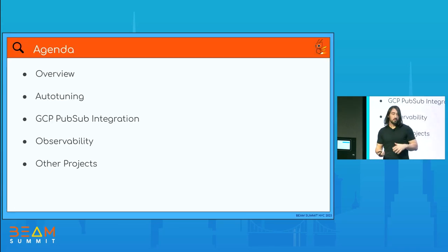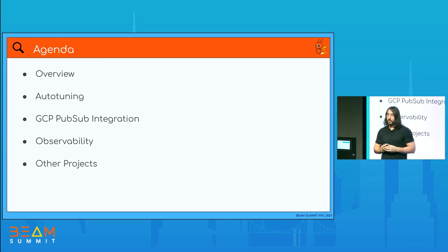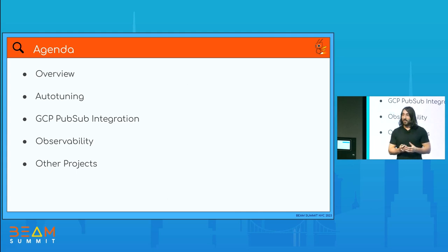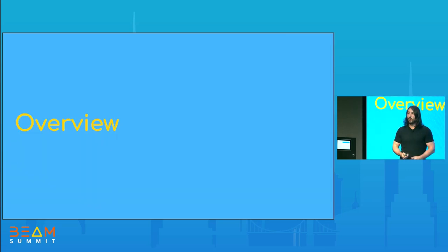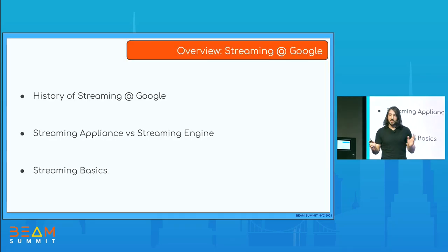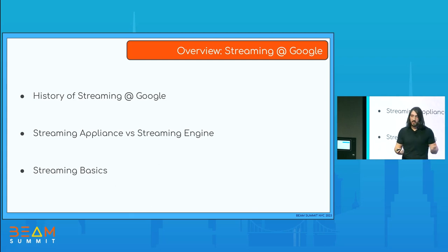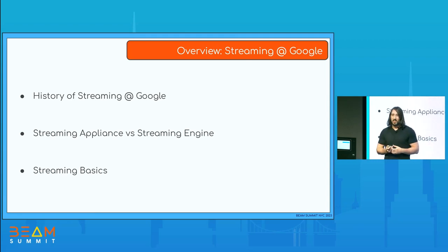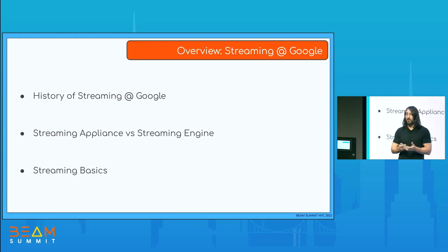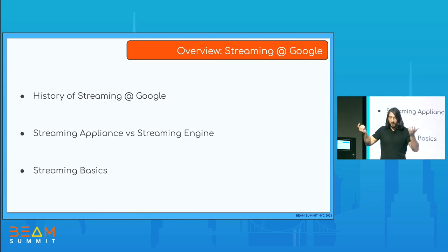I'm going to start with an overview of streaming at Google, then get into the projects: auto-tuning, some PubSub integration, observability projects, and then other projects — a very generic category. Before diving into the projects, I want to cover a bit of history and the difference between the two systems in Dataflow today — streaming appliance and streaming engine — plus some streaming basics.